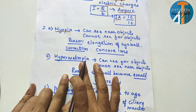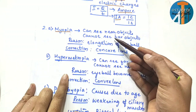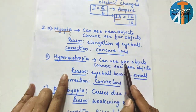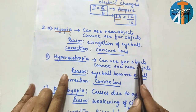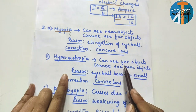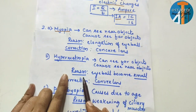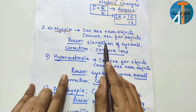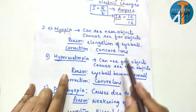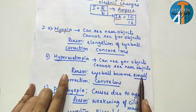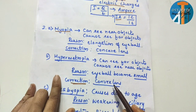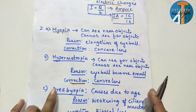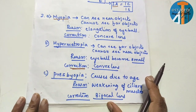Hypermetropia is the reverse of myopia. It means: can see far objects, cannot see near objects. The reason is the eyeball becomes small — reverse elongation of eyeball. The correction is by using a convex lens.